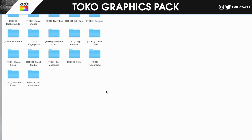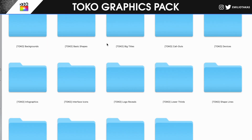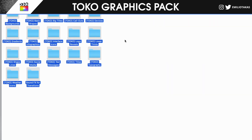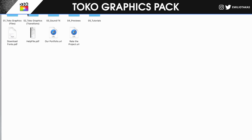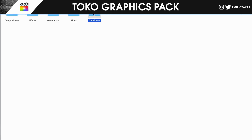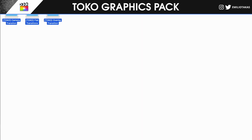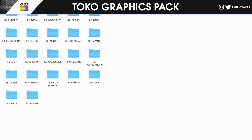Select all of them, Command C to copy, and then Command V to paste them into the Titles folder. Same thing for transitions — select the transitions, Command C to copy, then go into the Transitions folder and paste them there. So we have titles, we have transitions, and also this pack includes some sound effects.